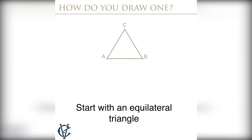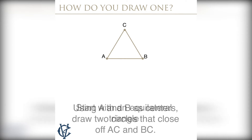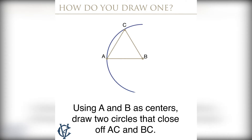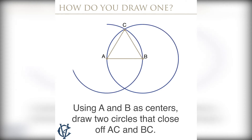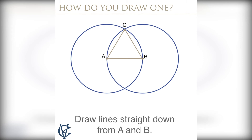Start with an equilateral triangle. Using A and B as centers, draw two circles that close off AC and BC. Draw lines straight down from A and B.